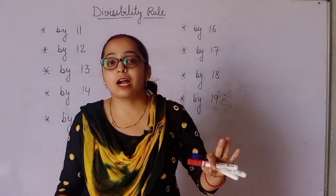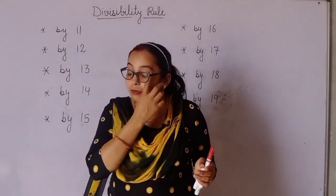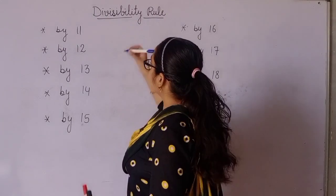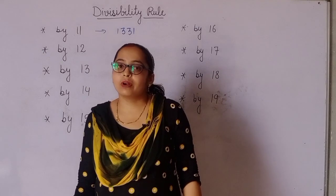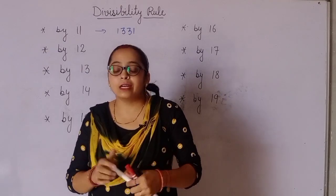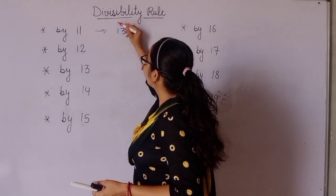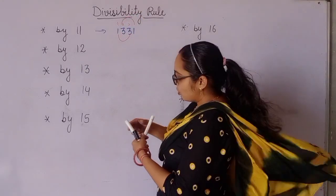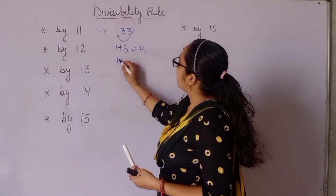Let's start. What is the divisibility rule for 11? Suppose any number is given and you have to divide that number by 11. The rule is: suppose you have the number 1331. You have to find out whether it is divisible by 11 or not. First, count the even and odd place digits. So you add the odd-place digits: 1 and 3 = 4, and the even-place digits: 1 and 3 = 4.